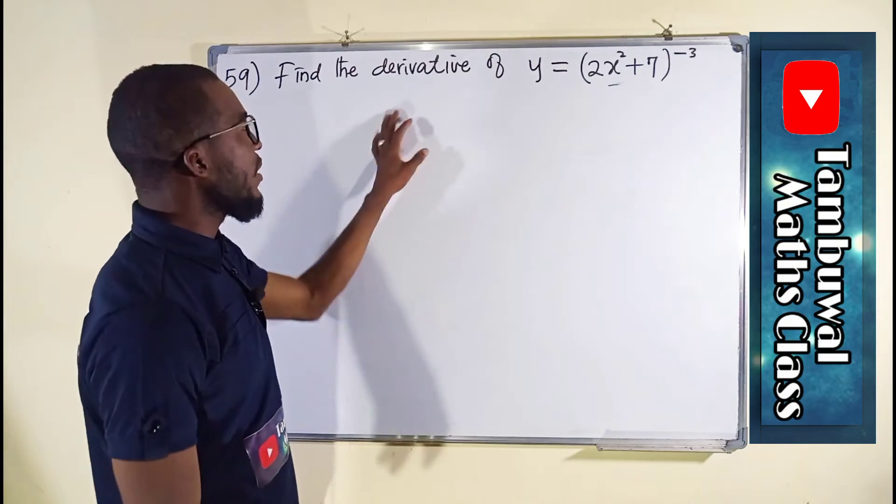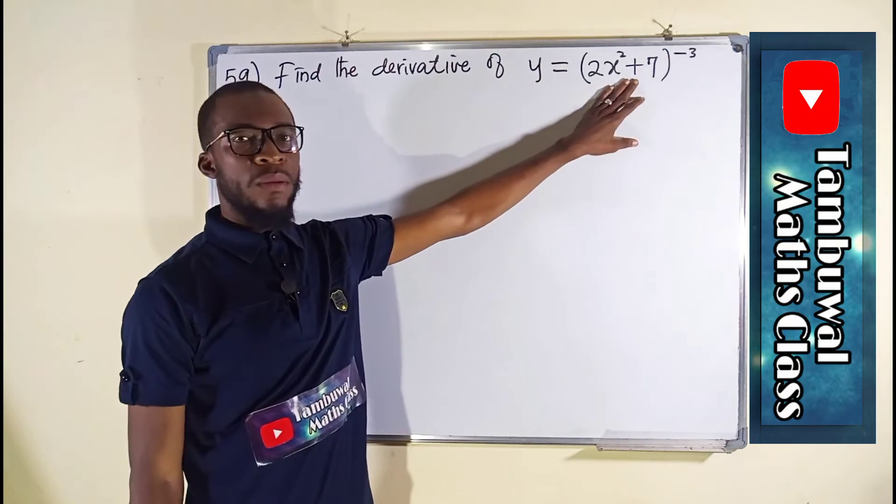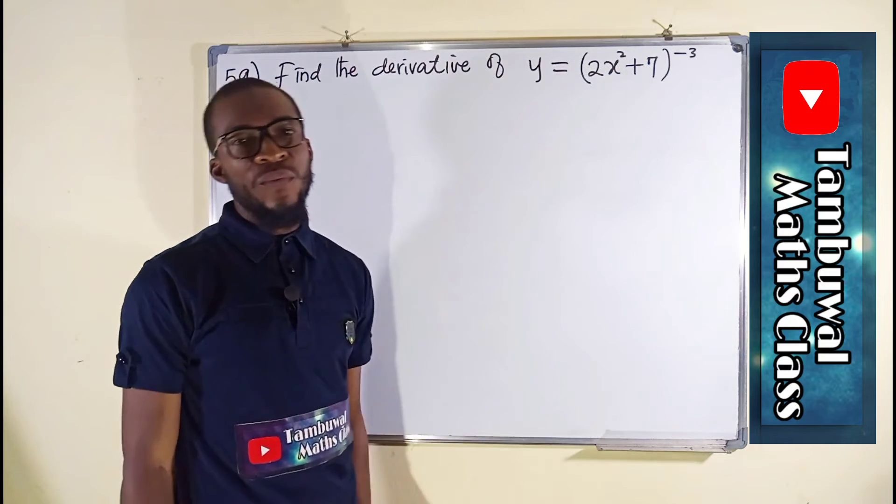Question number 59 says we should find the derivative of this, meaning we should differentiate this function of y.